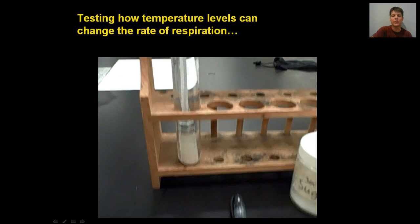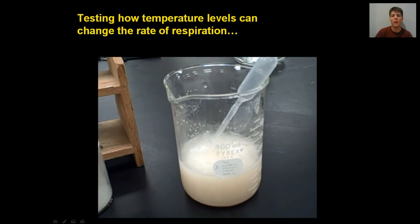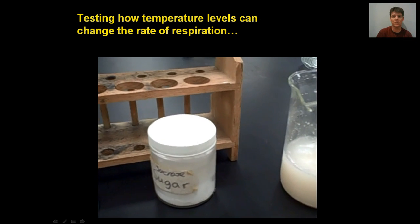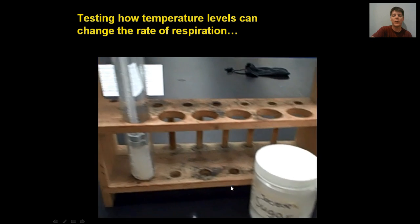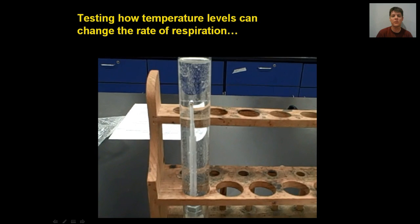Now, a little bit more about the setup of this experiment. We need some metal nuts in order to weight down the pipette so that it's staying submerged under the water. Then we have a solution of sucrose, or apple juice can be used too, yeast and water.